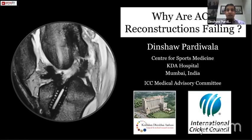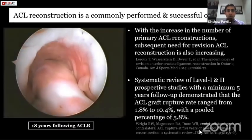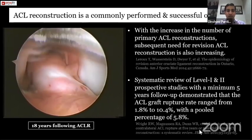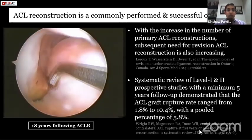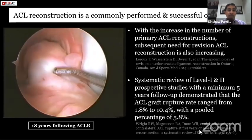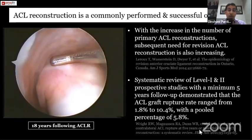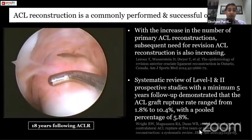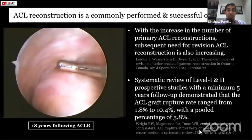I'm going to talk about why ACL reconstructions are failing in 2020. We know ACL reconstructions are commonly performed and successful procedures. This particular footballer I treated 18 years back with a technique not followed today played competitive football for eight years and now 18 years later comes in for an osteochondral patellar fracture — his ACL looks good, revascularized. But with the increase in primary ACL reconstructions, the need for revision is also increasing. A good systematic review of level one and two prospective studies with minimum five-year follow-up shows that ACL graft failure ranges from 1.8% to 10.4%, with a pooled percentage of about 5.8%.